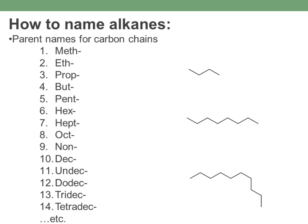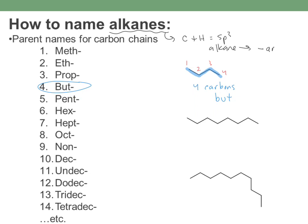You just look at your molecule and count the carbons. For example, if I count 1, 2, 3, 4 — four carbons — I know this must be a 'bute' something. Since we're talking about alkanes, which are just C and H, all sp3 hybridized, the ending is 'ane.' So four carbons gives us butane — 'bute' from four carbons, 'ane' from the alkane ending.